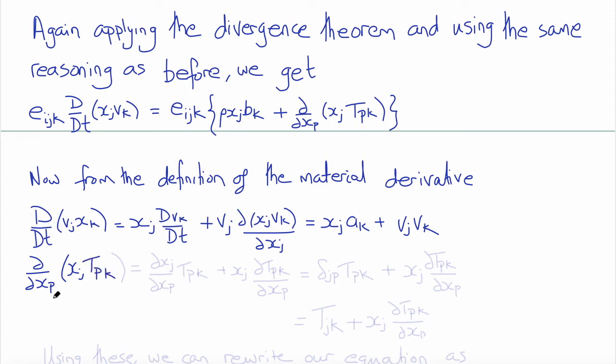Similarly, we can expand the derivative del del XP of XJ TpK, to be del XJ del XP using the chain rule times TpK, plus XJ times del TpK del XP.